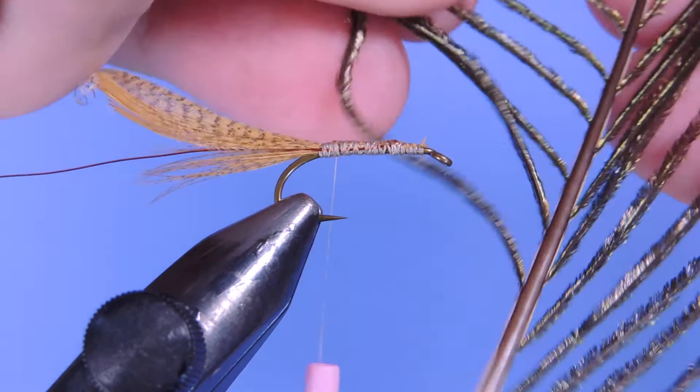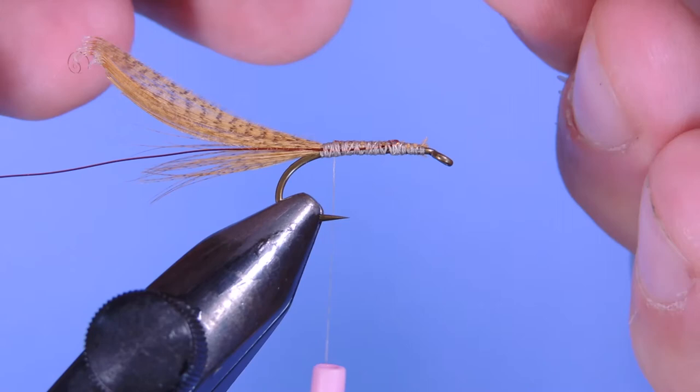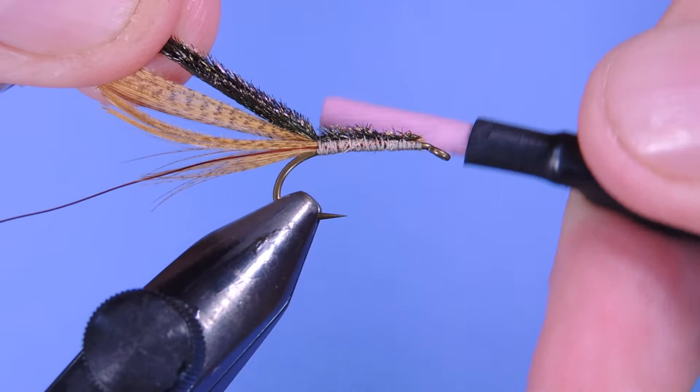Next we're going to take some peacock hurl and take four or five pieces off the stem here. We're just going to trim off those butts and tie those in toward the tail.